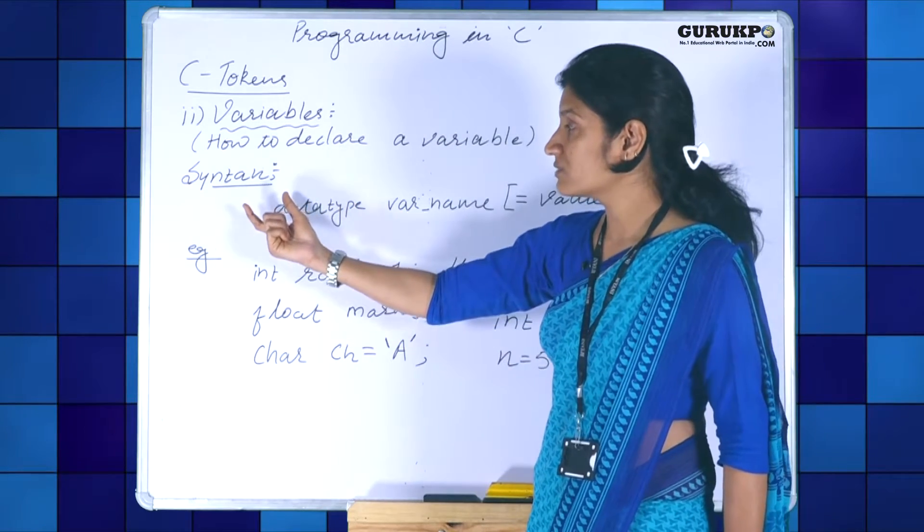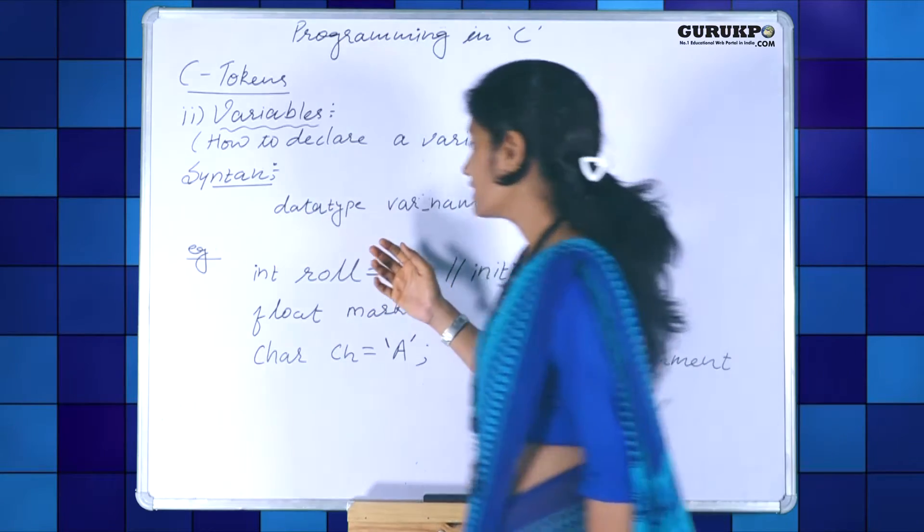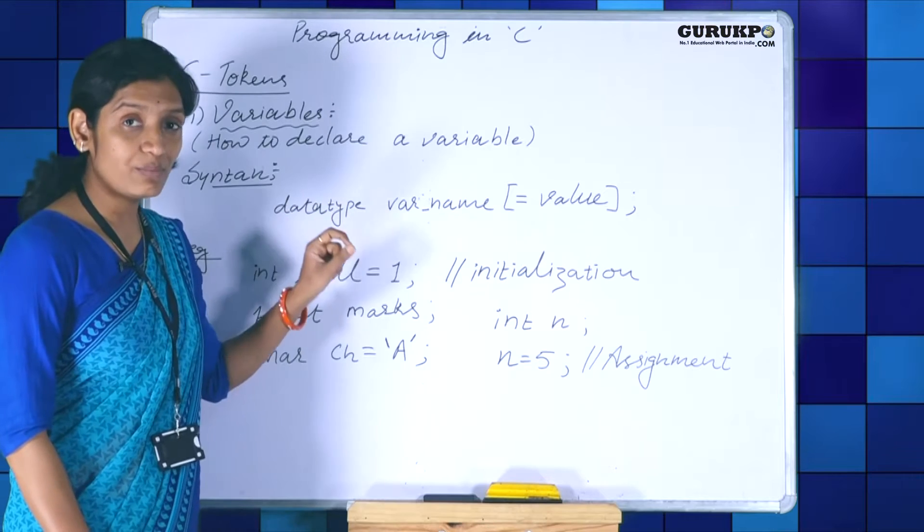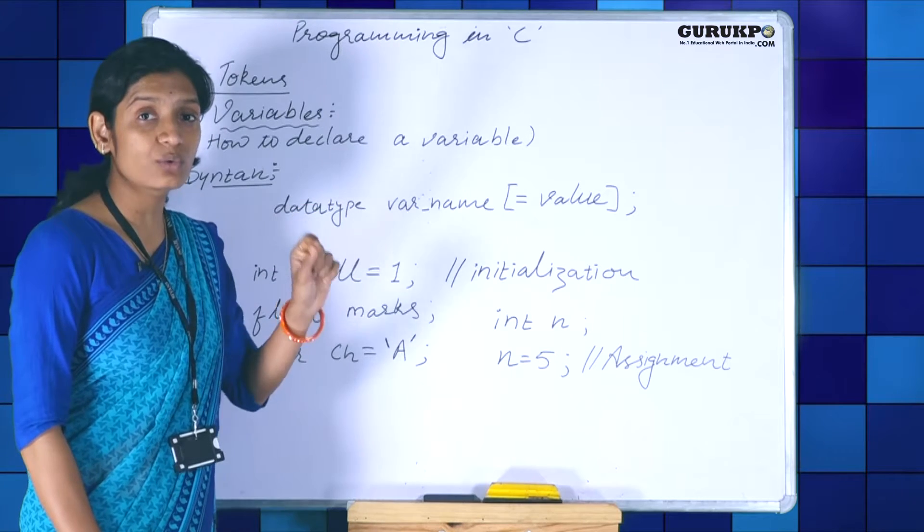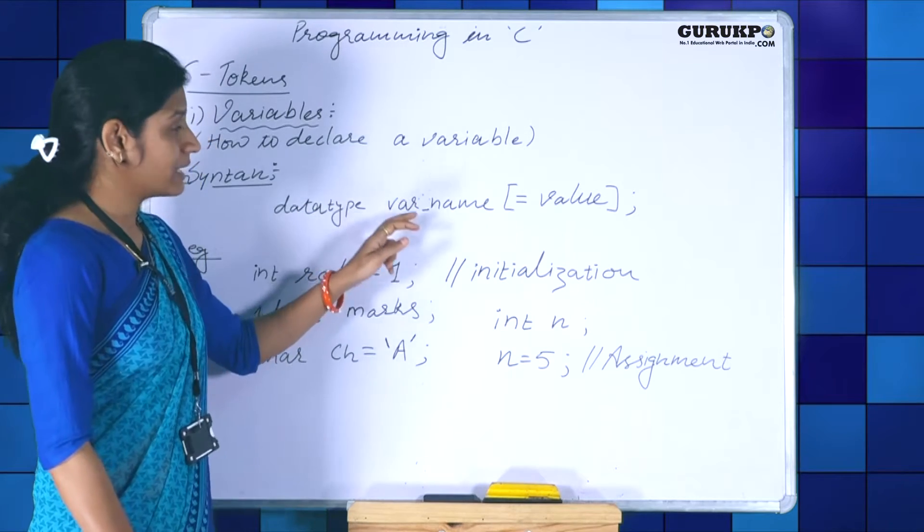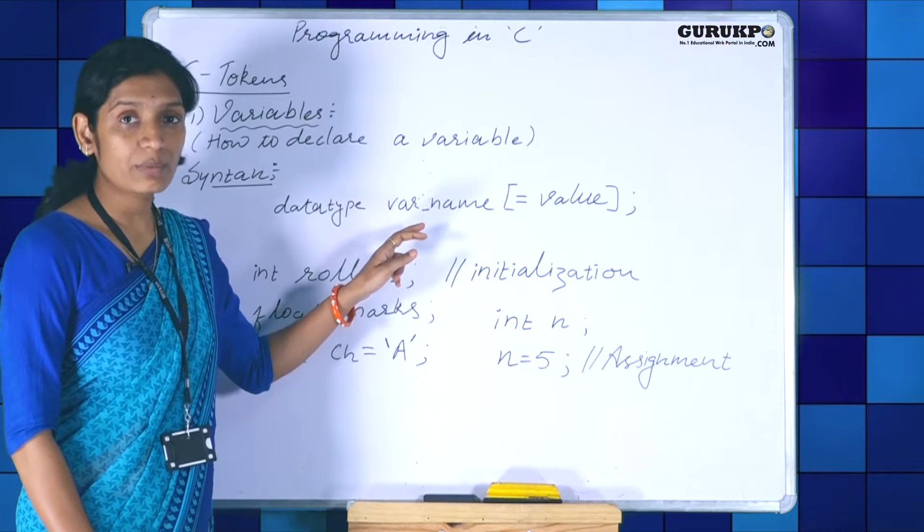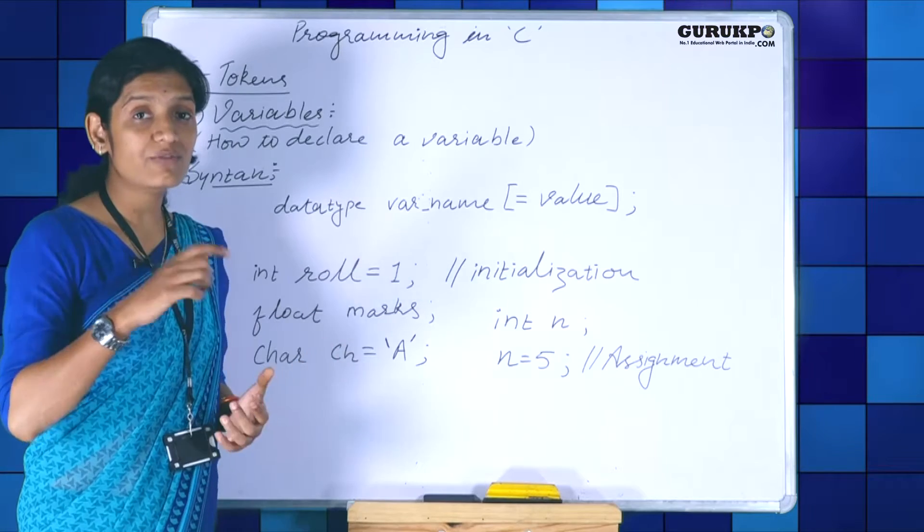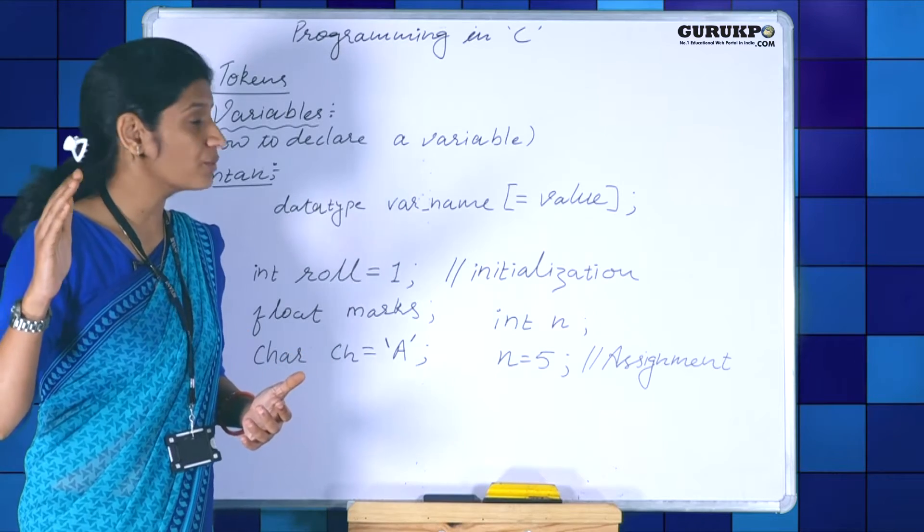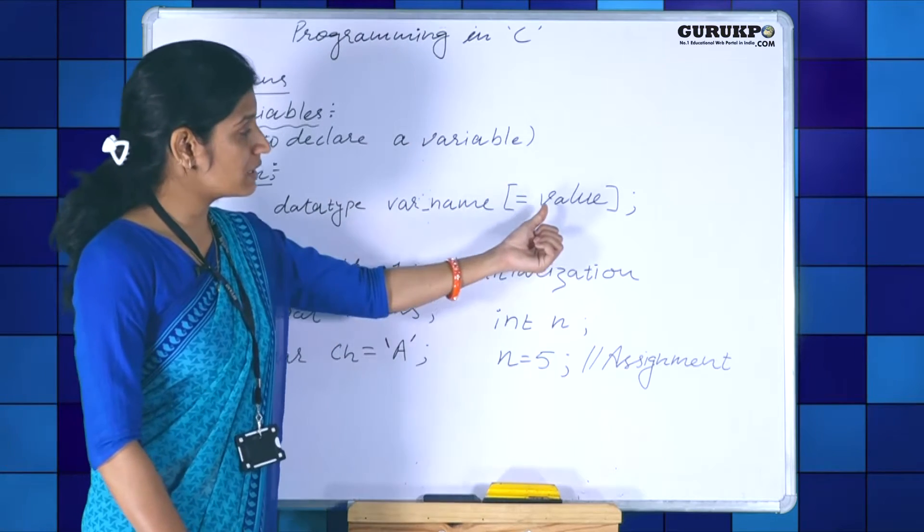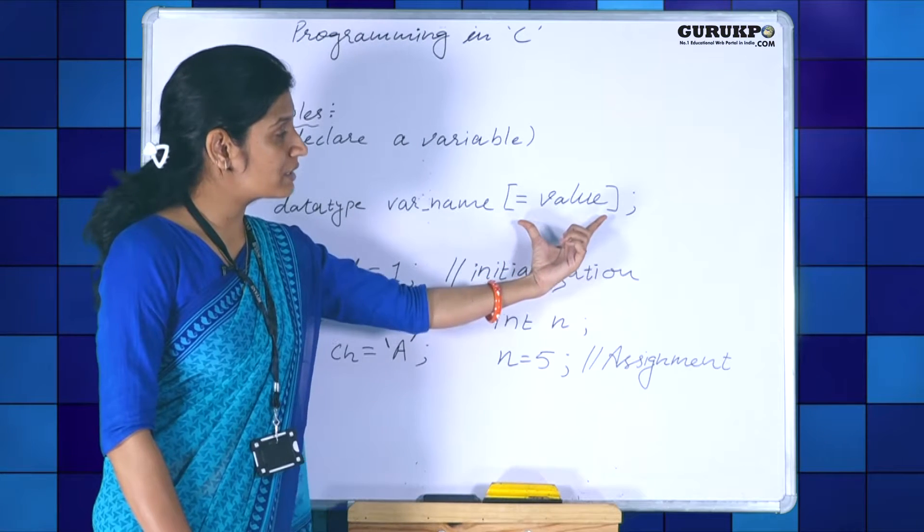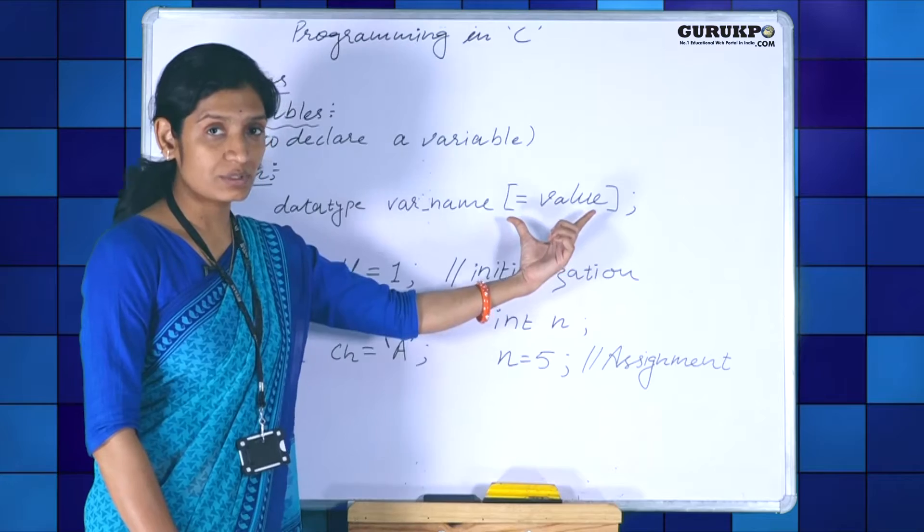For declaring variables we have this syntax data types. First we need to mention the data type, the type of data that the variable is going to hold. Next is you need to mention the variable name. It is the name by which this variable will be identified throughout the program. And the next thing is the value that is optional. This thing that I have written in the square brackets is optional.